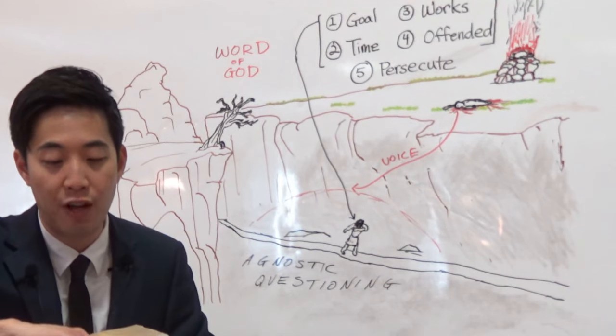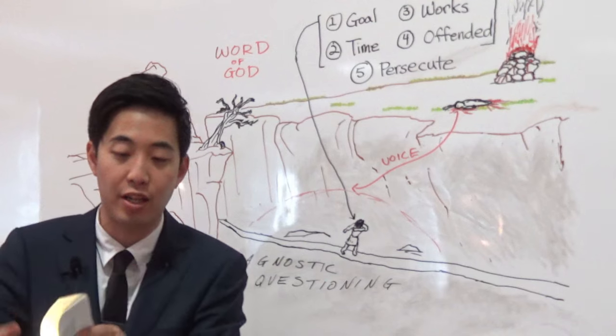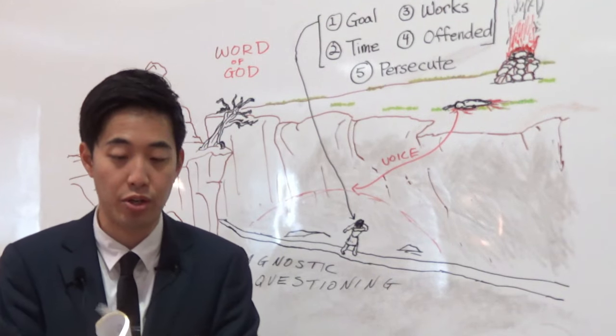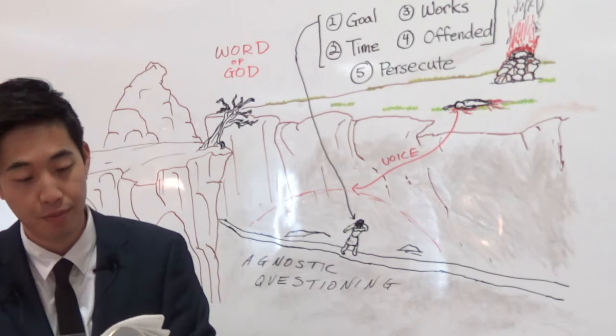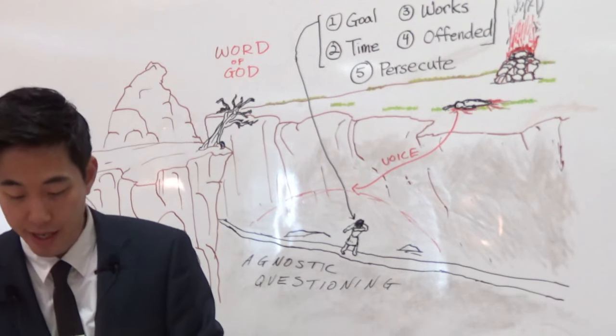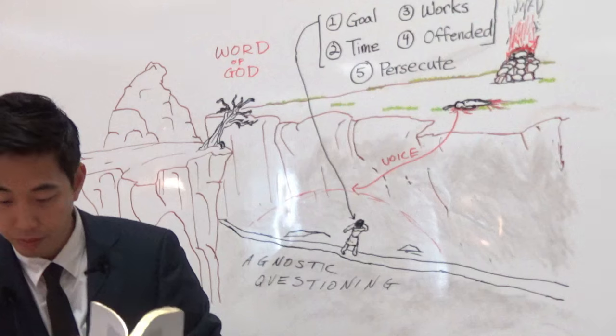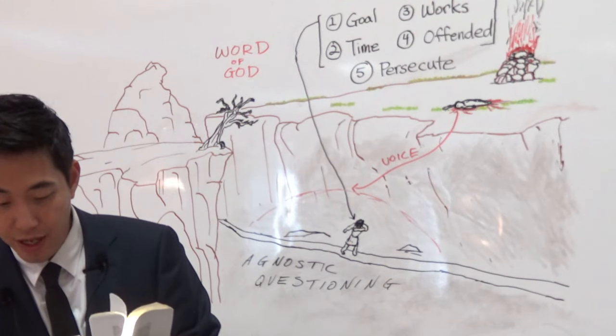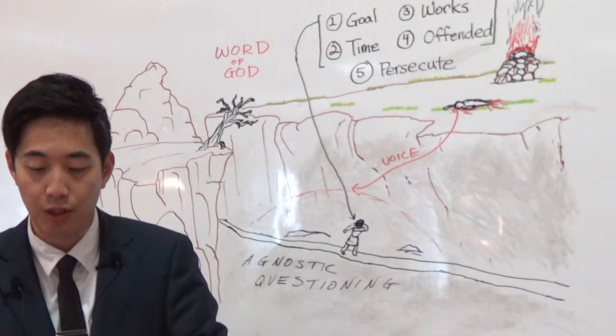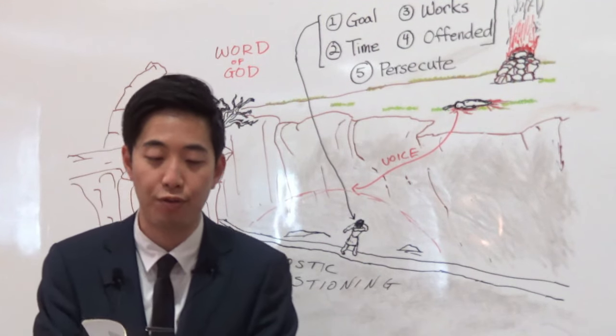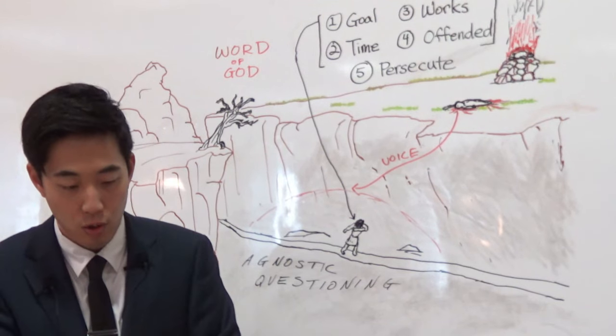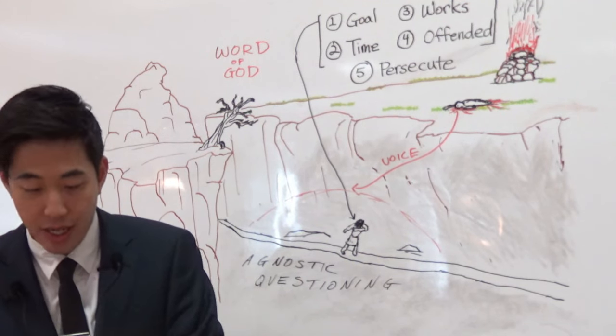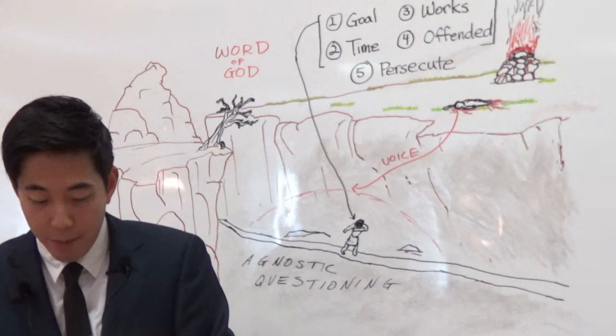So notice that the ground, when it receives Abel's blood, the blood is speaking out of the ground. Now, what does that mean? This might be a blessing to you. We're going to turn to Hebrews 11 and then Hebrews 12. I'm going to explain this.